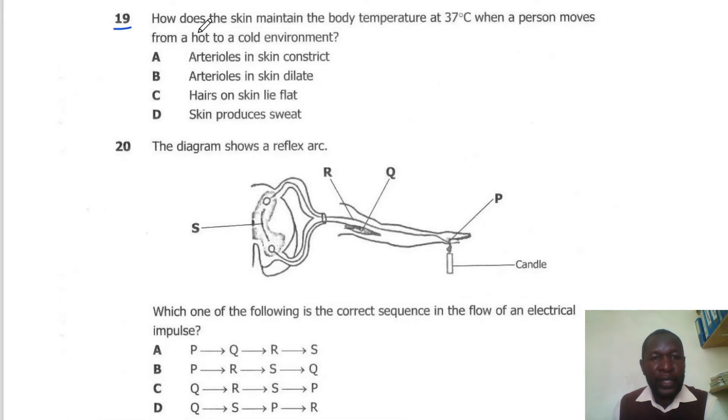Question 19. How does the skin maintain the body temperature at 37 degrees when a person moves from a hot to a cold environment? When a person is in a cold environment, the arterioles in the skin will constrict. This is known as vasoconstriction. So the correct answer here is A.